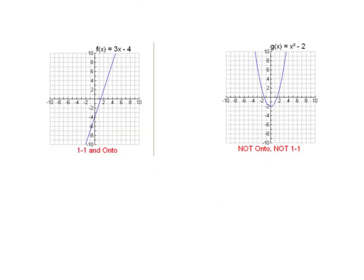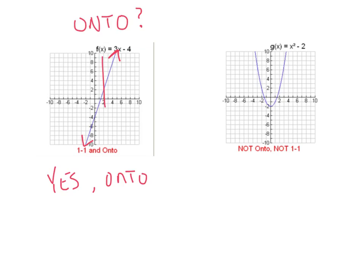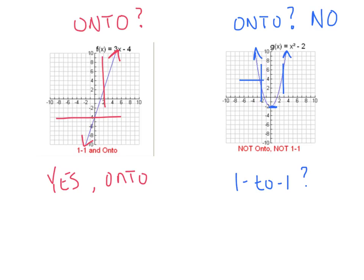Graphically, to determine onto we ask: does the graph extend infinitely high and infinitely low? For this first graph, yes — it extends infinitely in both directions, so it is onto. It passes the vertical line test so it's a function, and it passes the horizontal line test so it's one-to-one. For the next graph — the parabola — it does extend infinitely high, but it never goes lower than y = −2, so it does not extend infinitely low, and therefore it is not onto. It passes the vertical line test but fails the horizontal line test, so it is a function but not one-to-one and not onto.